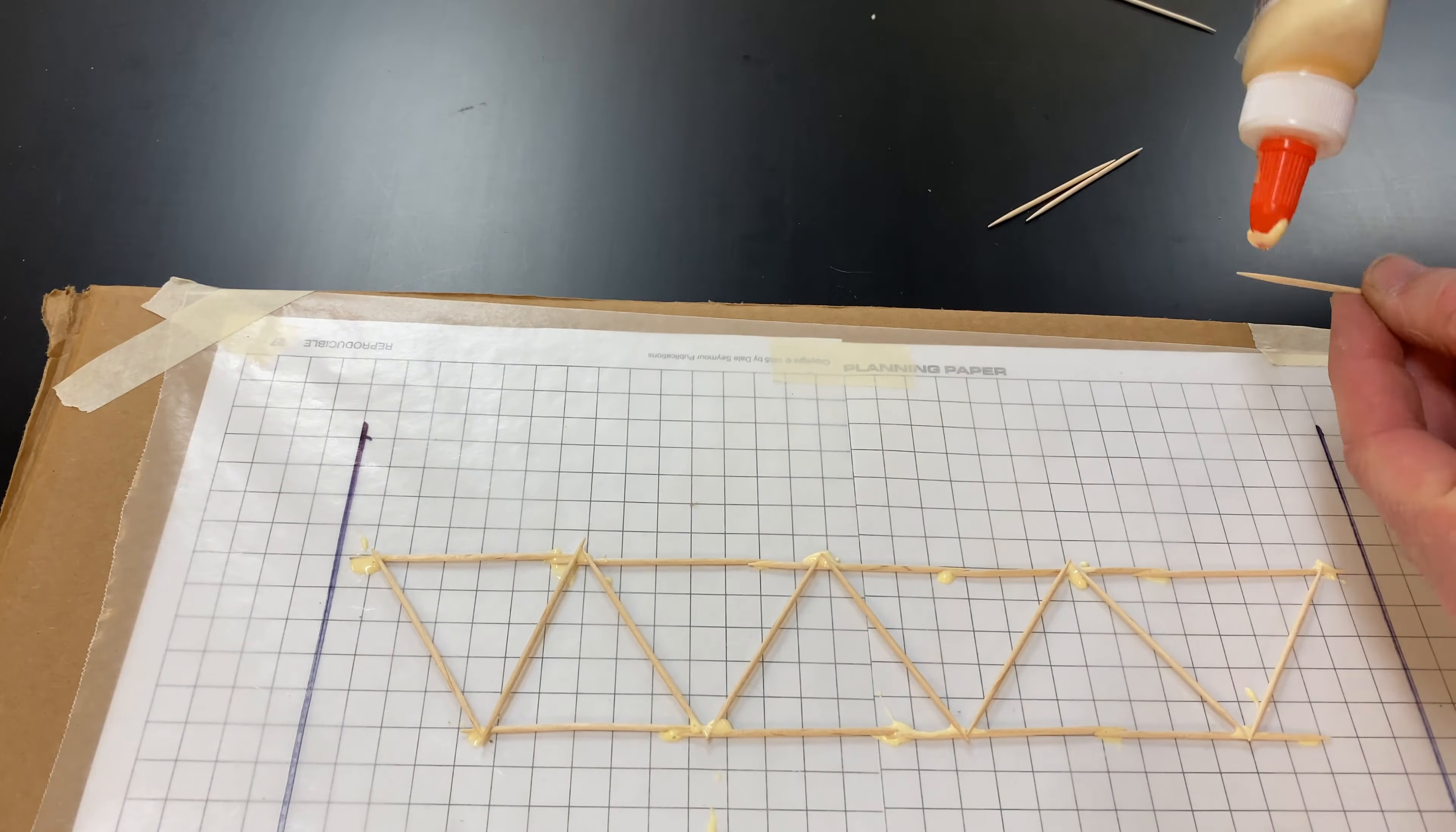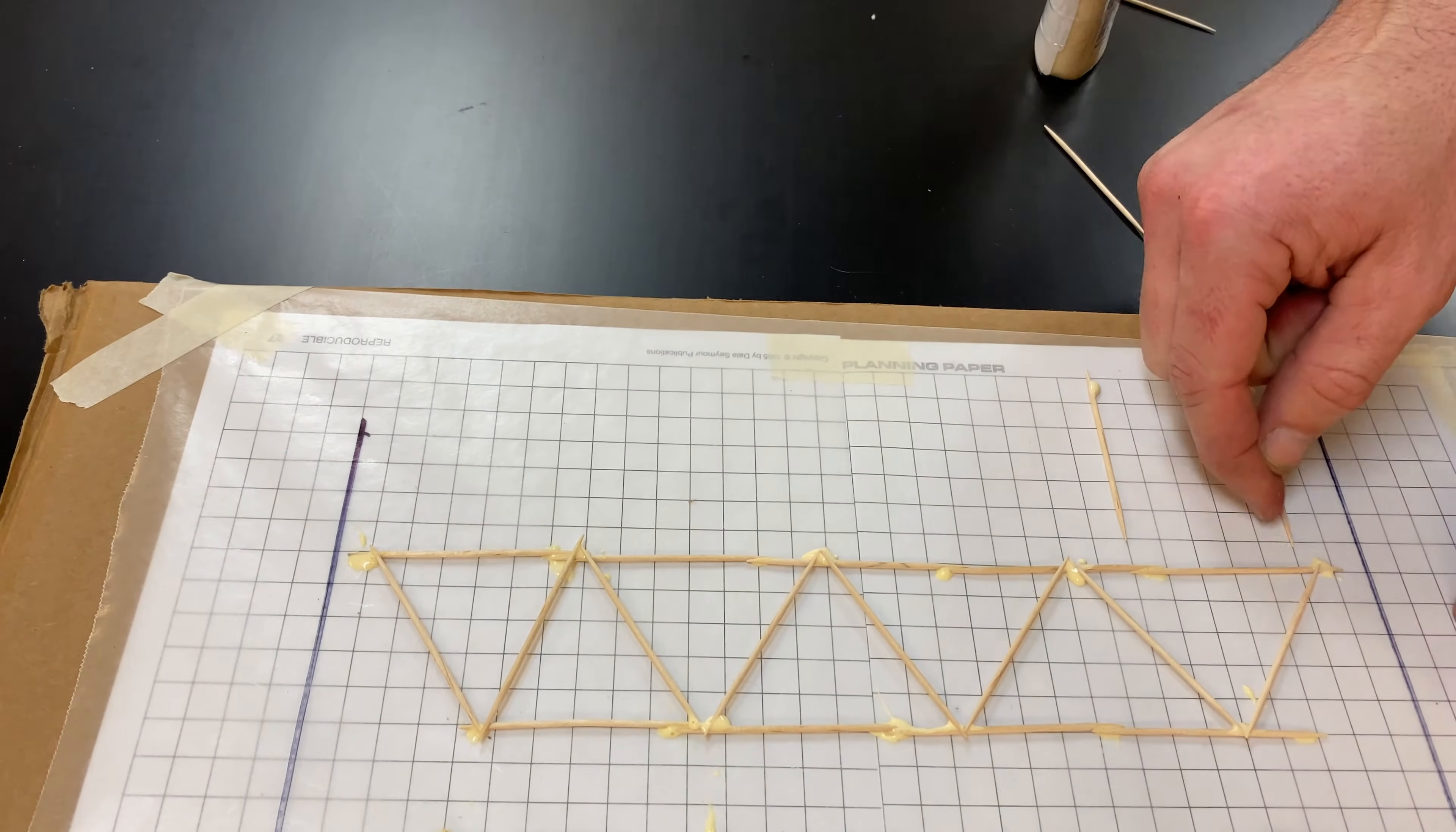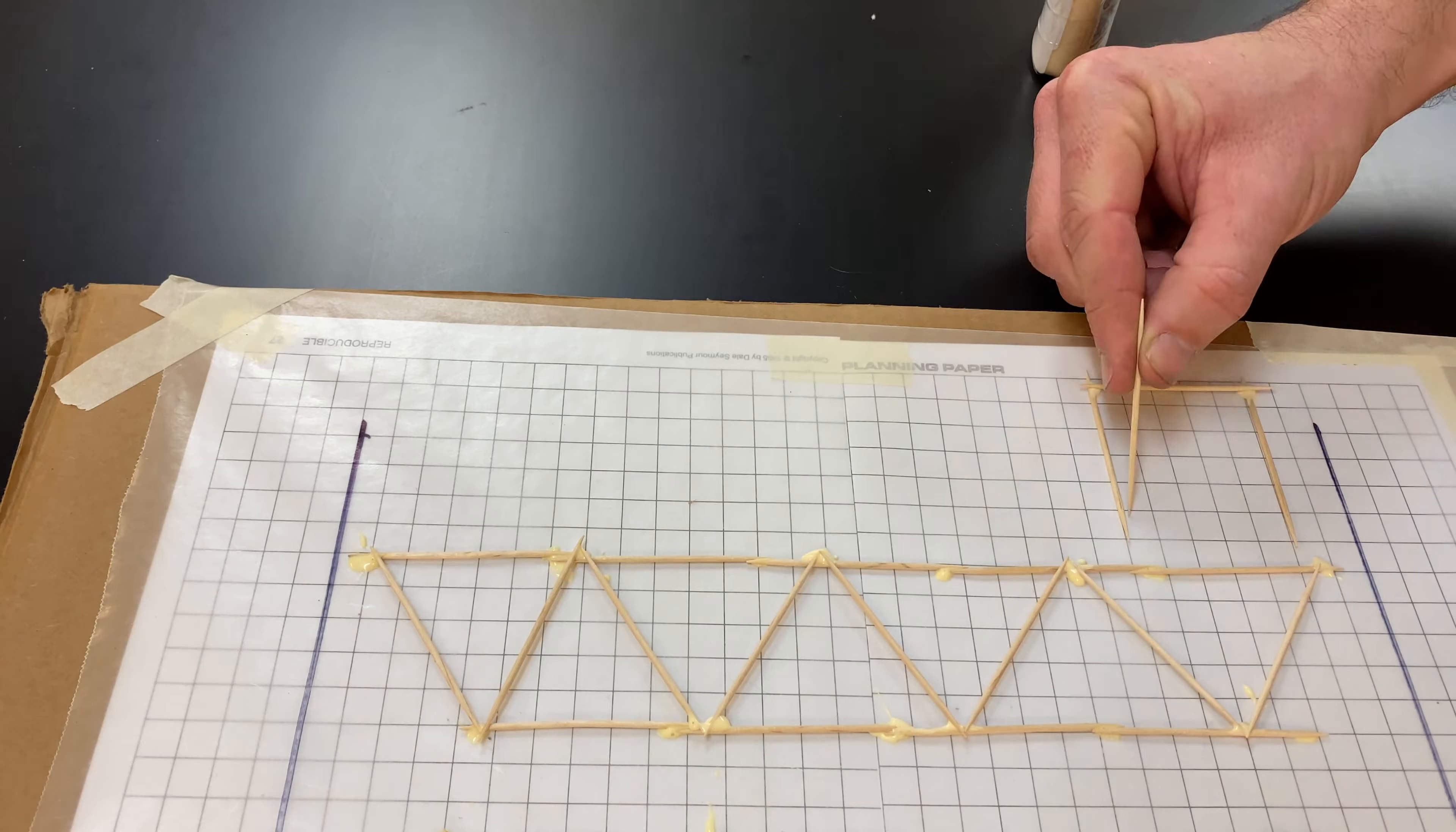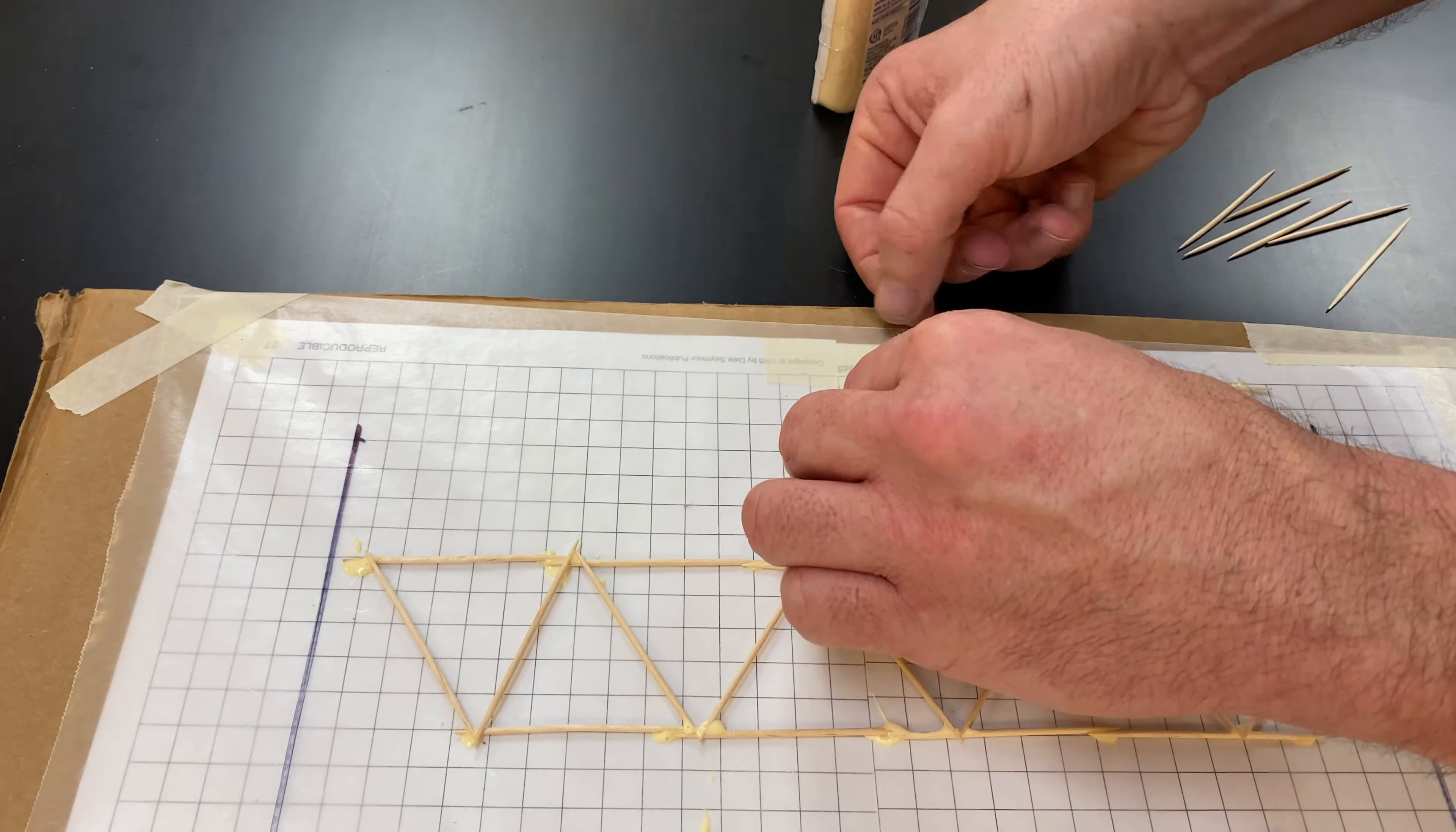While the sides are drying, I'm going to go ahead and build the supports that will hold the bridge up. Basically, I'm just positioning two toothpicks about five centimeters apart and then gluing one toothpick across the top. I'm going to make four of these.